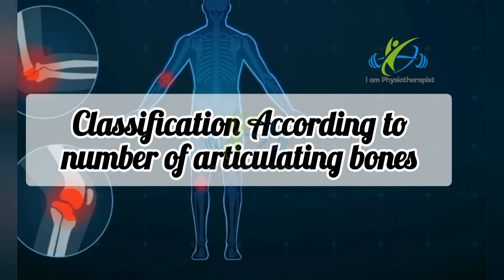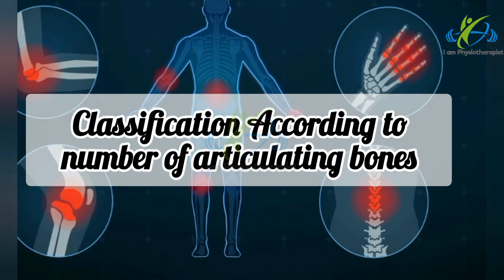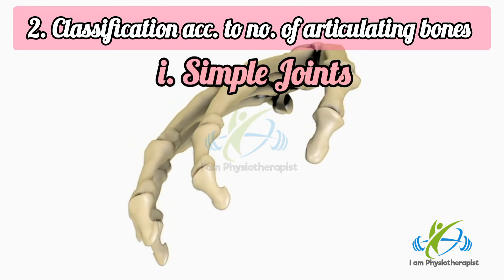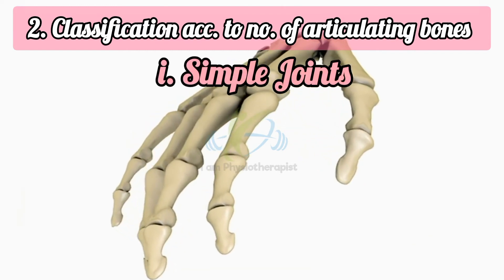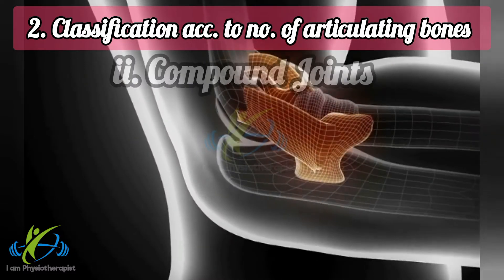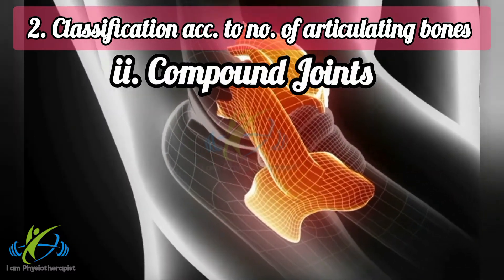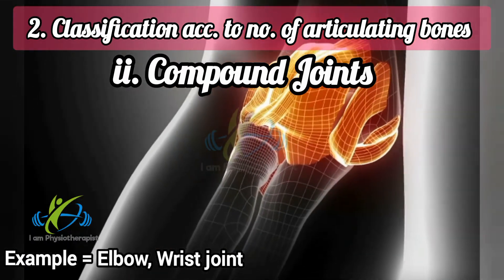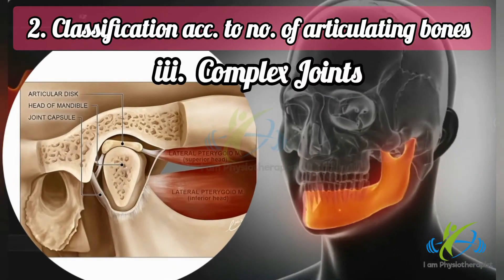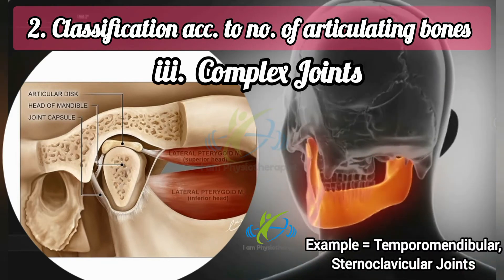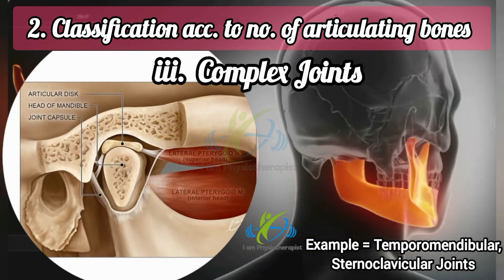Classification according to number of articulating bones. Joints are classified into three types: simple joints, in which only two bones articulate with each other — for example, interphalangeal joints; compound joints, in which more than two bones articulate within one capsule — for example, elbow joint or wrist joint; and complex joints, in which the joint cavity is divided by an intraarticular disc — for example, temporomandibular joint and sternoclavicular joint.